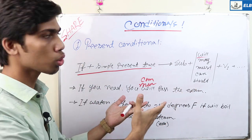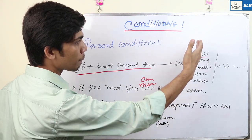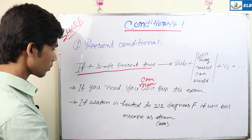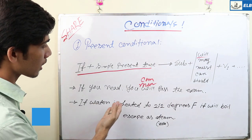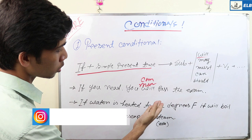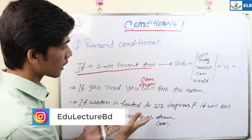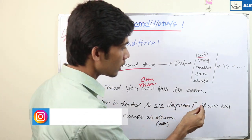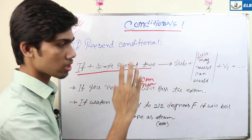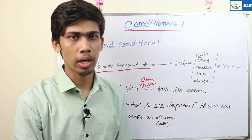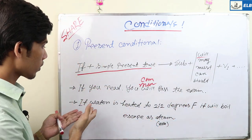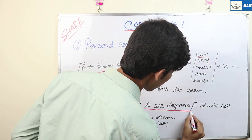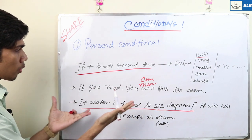So, you can keep the options: will, may, must, can, should. Next one: if water is heated to 100 degrees Fahrenheit, it will boil and escape as steam. This one — if water is heated, it will be the first conditional.